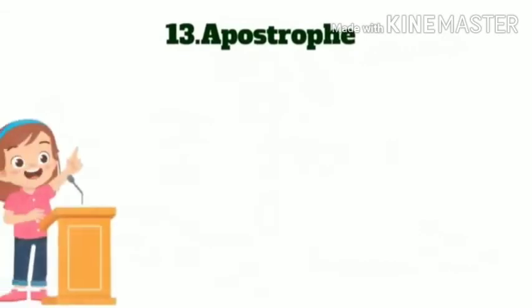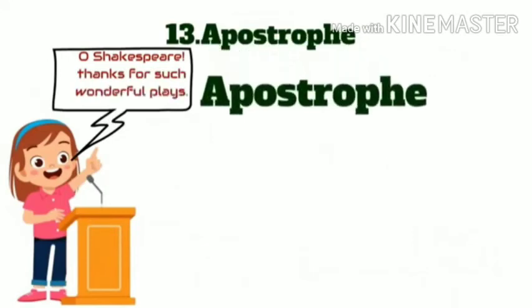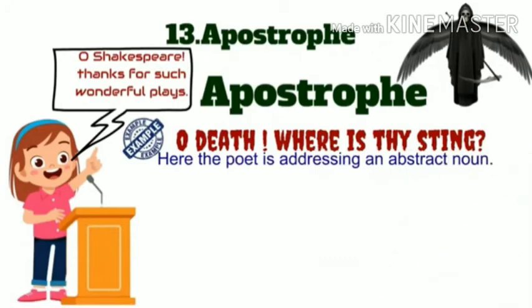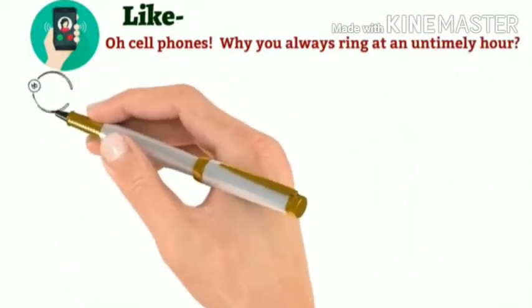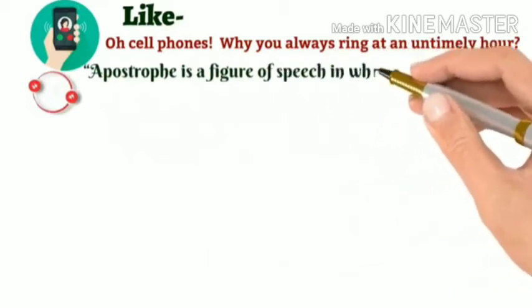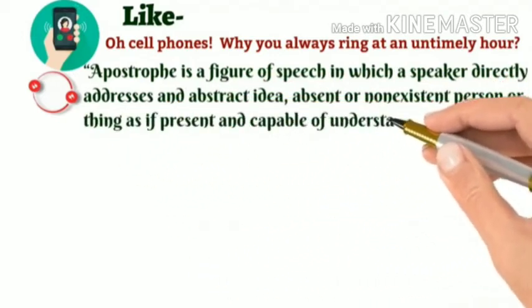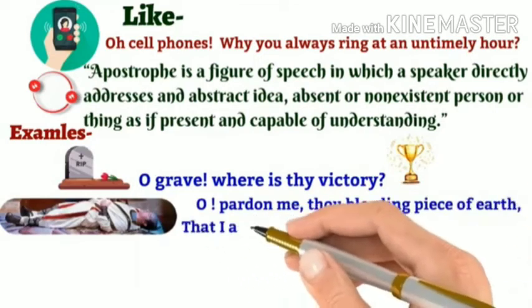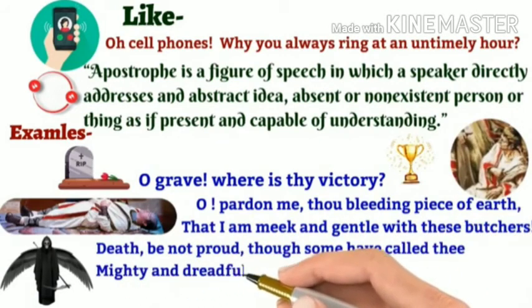Apostrophe. Suppose you are giving a speech and in the meanwhile you speak a poetic line addressing someone or something who's not present — the figure of speech will be apostrophe. Example: 'O death, where is thy sting?' Here the poet is addressing an abstract noun. Poets usually address God, government, world, and even cell phones, like: 'Oh cell phones, why you always ring at an untimely hour.' Apostrophe is a figure of speech in which a speaker directly addresses an abstract idea, absent or non-existent person or thing as if present and capable of understanding. Examples: 'O grave, where is thy victory?' 'O pardon me thou bleeding piece of earth, that I am meek and gentle with those butchers.' 'Death, be not proud, though some have called thee mighty and dreadful, for thou art not so.'